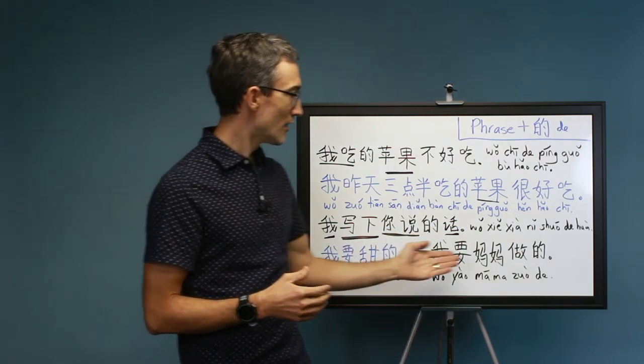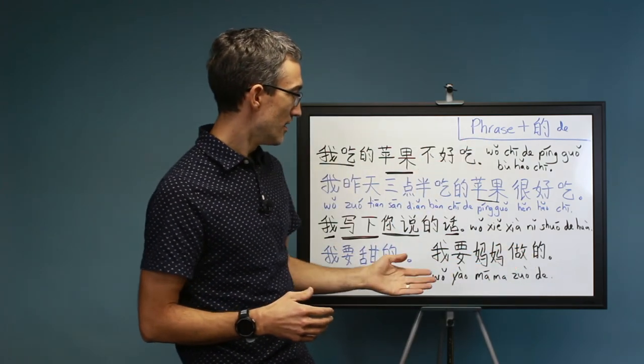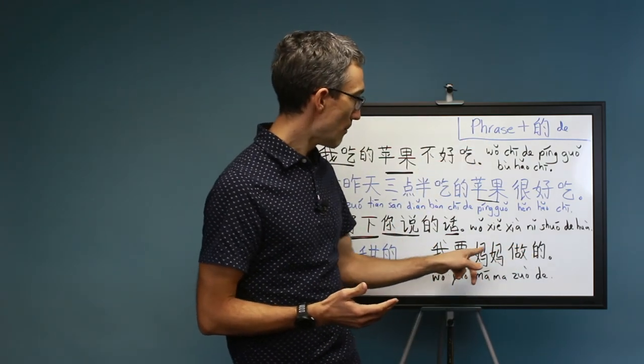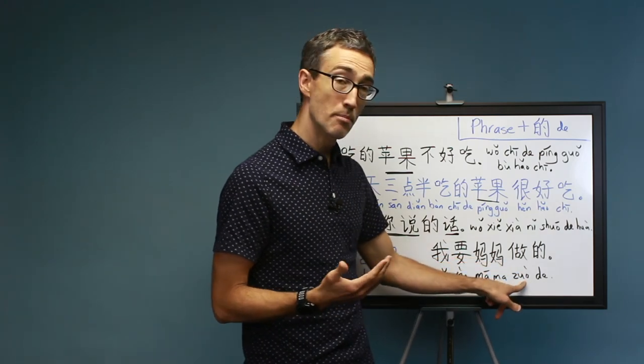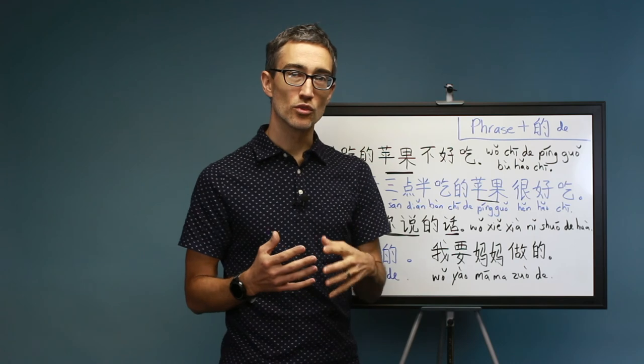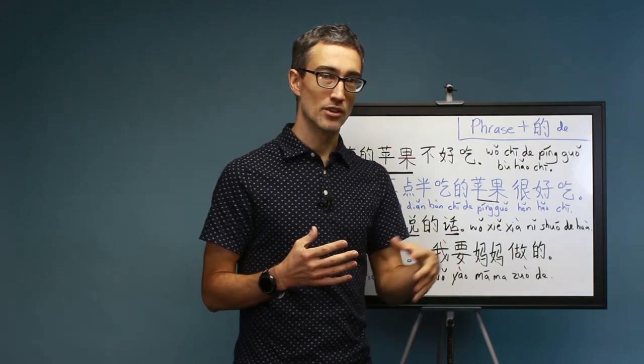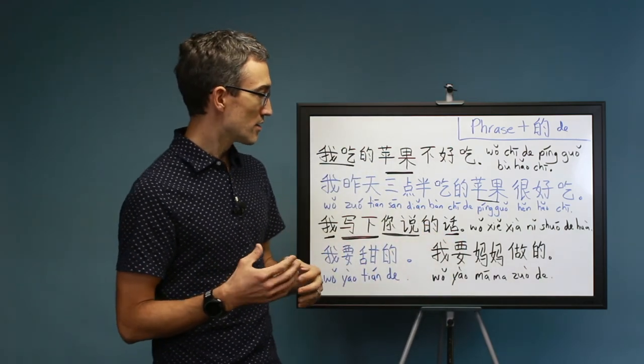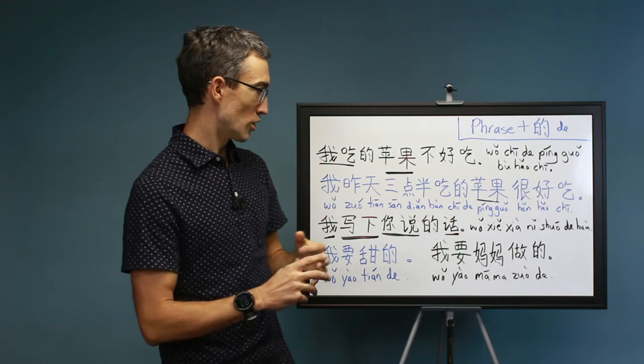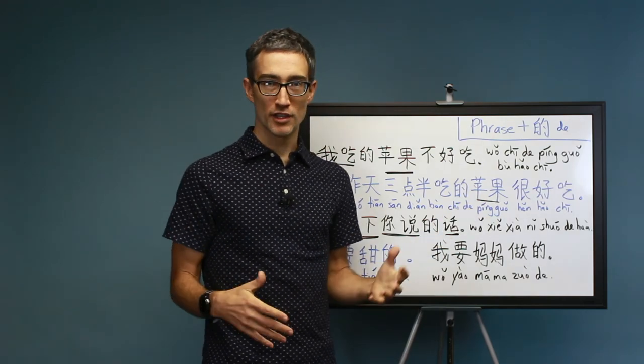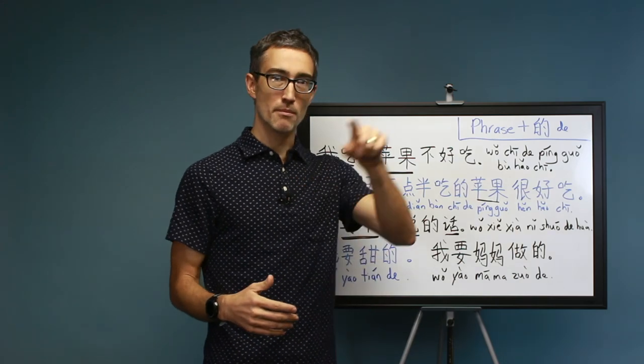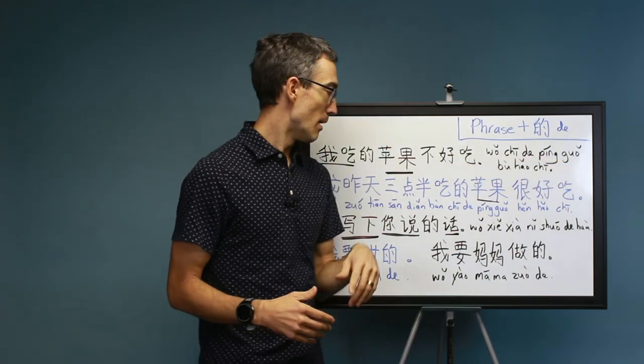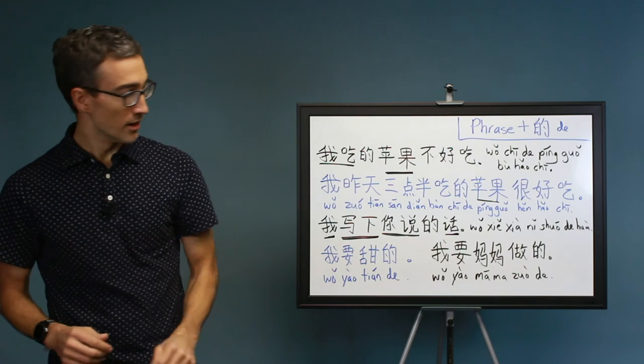If I want to say, here's a very simple adjective, tian means sweet. Wo yao tian de. I want the sweet one, or I want a sweet one, depending on context. And here we have a more complex phrase, same idea. Wo yao mama zuo de. I want, zuo means to do or to make, mama is mother. So I want one that mother has made, or the one that mother has made. So that's kind of like maybe we're talking, we have two batches of cookies. Dad made one. Mom made the other. And the kid says, I want mama zuo de.